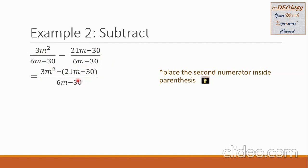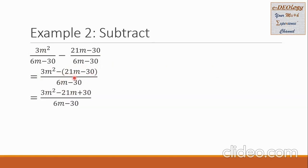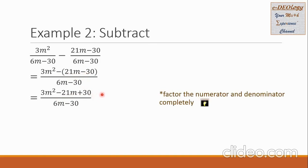We're going to simplify by removing the grouping symbol. When we do that, we should change the sign of all the terms inside the grouping symbol. So the 21m, which is positive, becomes negative 21m, and the negative 30 becomes positive 30. From here, we're going to factor the numerator and denominator completely. In the numerator, there is a GCF of 3.